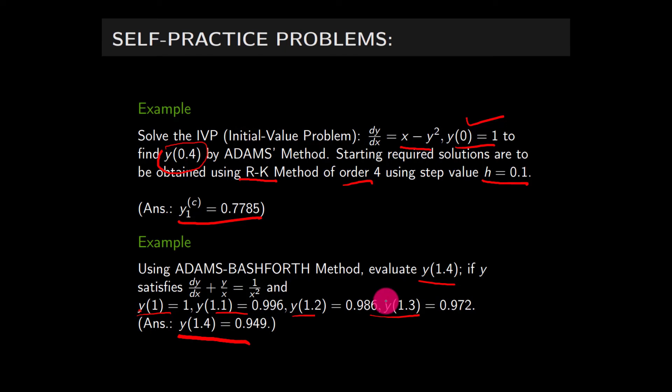For the second problem, dy/dx = 1/x² - y/x, and all four values are directly given to you, so use them to find y(1.4). You need to remember these two formulas very well: Adams-Bashforth predictor formula and Adams-Moulton corrector formula. Once you know these two formulas, there shouldn't be any problem in solving such initial value problems. Good luck in practicing these methods — thank you very much.